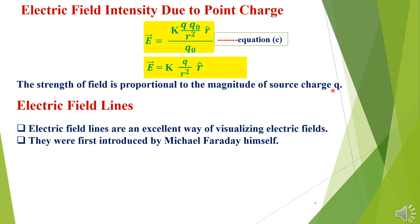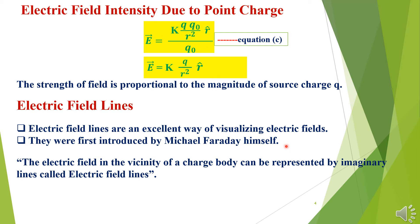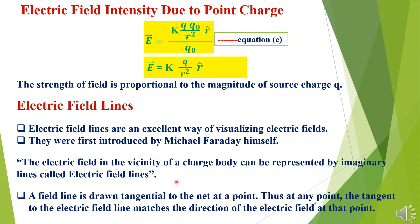Electric field lines are an excellent way of visualizing electric fields. They were first introduced by Michael Faraday. The electric field in the vicinity of a charged body can be expressed by imaginary lines called electric field lines. A field line is drawn tangential to the net field at a point, so the tangent to an electric field line at any point matches the direction of the electric field at that point.